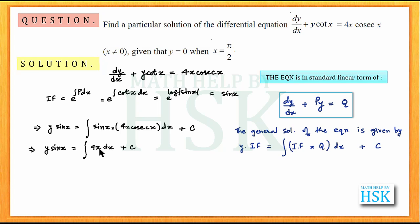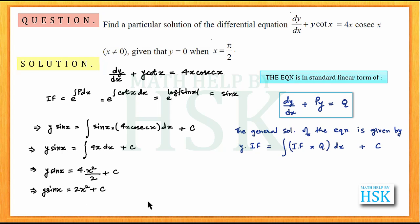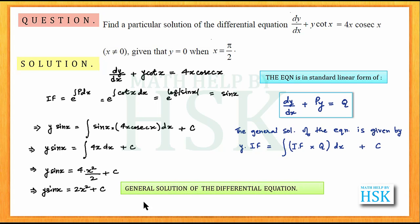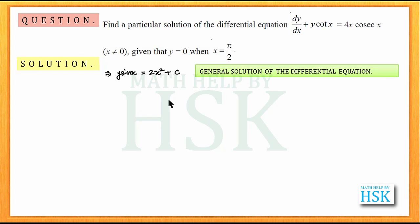Integration of x is equal to x square upon 2, so I get y sin x is equal to 4 into x square upon 2 plus c, or y sin x is equal to 2x square plus c. This is actually the general solution of the differential equation. We have to solve for the particular condition.